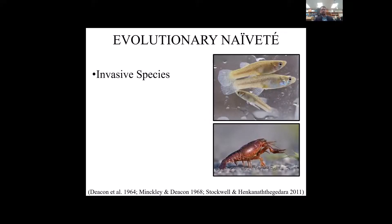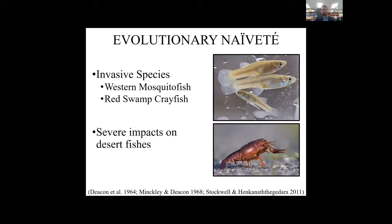New predators within these systems include invasive species such as the western mosquitofish and the red swamp crayfish. The delicate ecosystems of the aquatic islands, when a new species such as these invasive species is introduced, can have really big impacts on some of these desert fishes, especially if that fish is unable to respond accordingly.